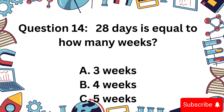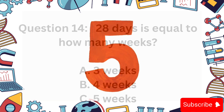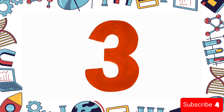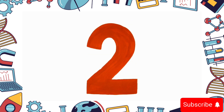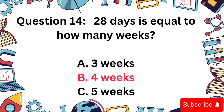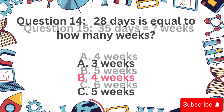Question 14. 28 days is how many weeks? A: 3, B: 4, or C: 5? The answer is B: 4 weeks, because 28 divided by 7 equals 4.